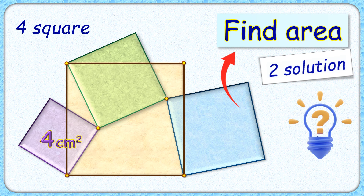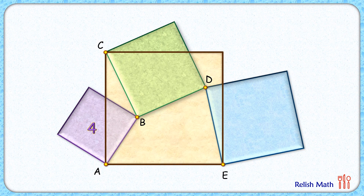Welcome everyone. This interesting question gives us 4 squares. The area of the purple square is 4 cm². With this limited data, we have to find the area of the blue square. We'll solve the question in two ways: a formal approach using concepts of similar triangles, and a logical approach without using any geometrical theorems. Now let's check the formal approach.